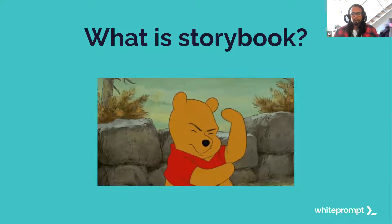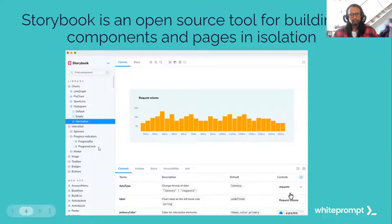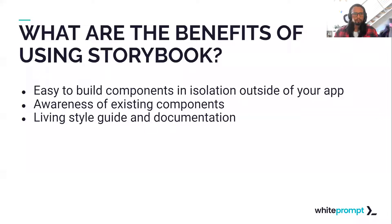So, what is Storybook? Storybook is an open source tool where we can build reusable components in isolation, without having to actually work on a particular page. As you can see in this example, we have a list of library components available for this particular application.